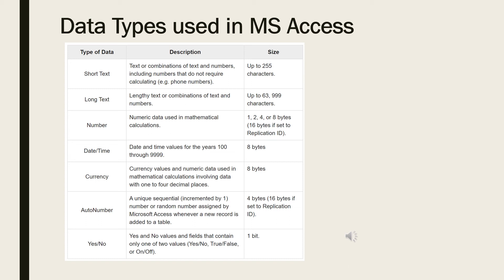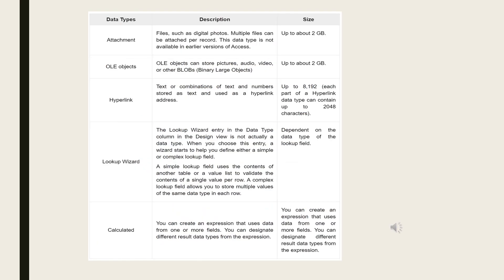Each field can store data consisting of only a single data type. Some of the most common data types used in Microsoft Access include: short text, long text, number, date and time, currency, auto number, and yes/no. Other data types include attachments, OLE objects, hyperlink, lookup wizard, and calculated data types.